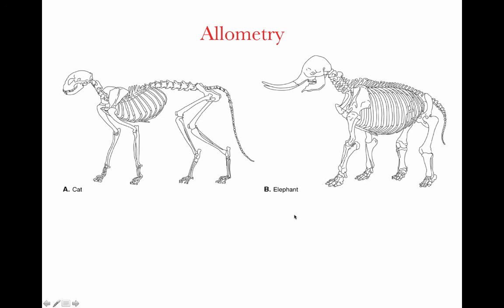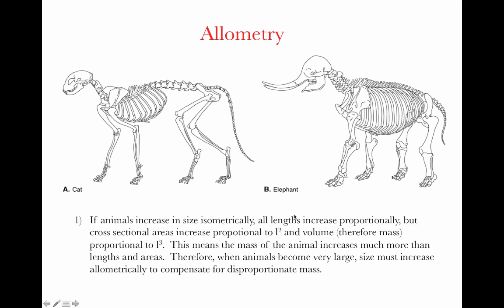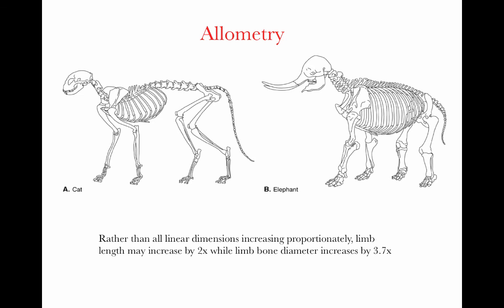Let's look at why. If animals increase in size isometrically, all lengths increase proportionally, but cross-sectional areas increase proportional to length squared, and volume — therefore mass — proportional to length cubed. This means that the mass of the animal increases much more than length or areas. Therefore, when animals become very large, size must increase allometrically to compensate for disproportionate mass — limb length may increase by two times while bone diameter increases by something larger, such as 3.7 times.